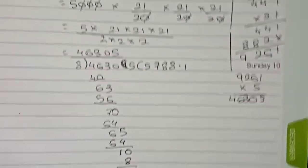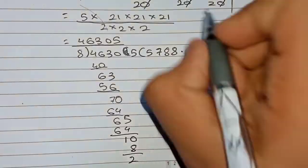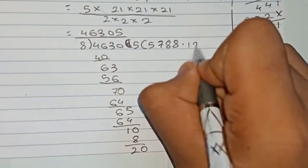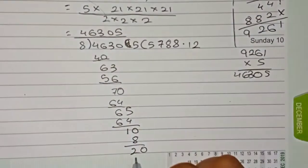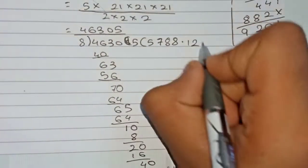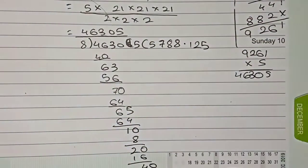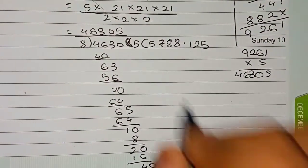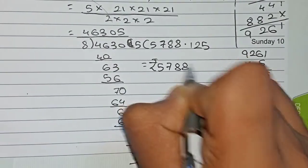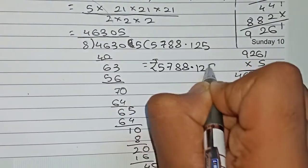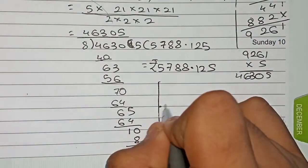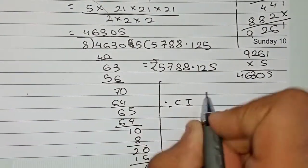Completing the division, we get a remainder leading to 0.125. So the amount equals rupees 5788.125.